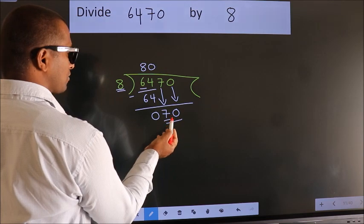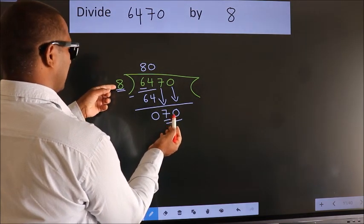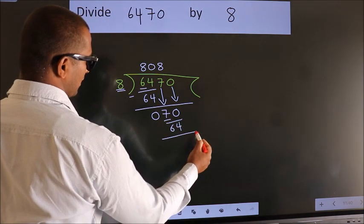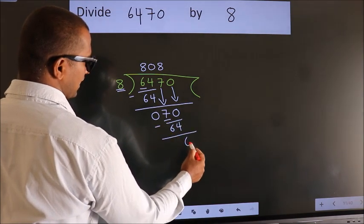A number close to 70 in the 8 table is 8 8s, 64. Now, we subtract. We get 6.